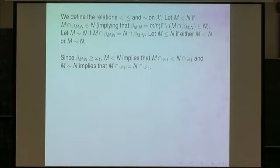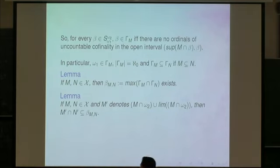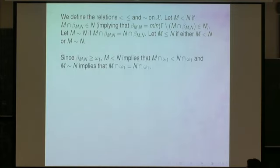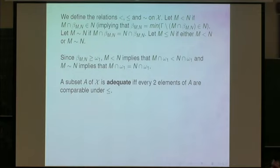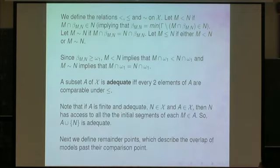In response to a question: beta_{MN} is the maximum of gamma_M intersection gamma_N. A subset A of X is adequate if every two elements of A are comparable under this relation. Note that if A is finite, adequate, and A is an element of N, then A together with N is also an adequate set — because N has access to all the elements of A and therefore to all the initial segments of each element of A.